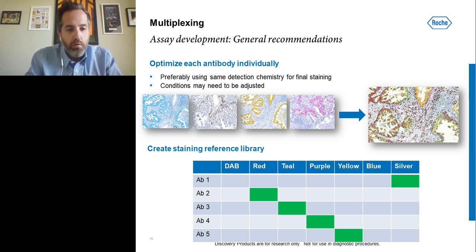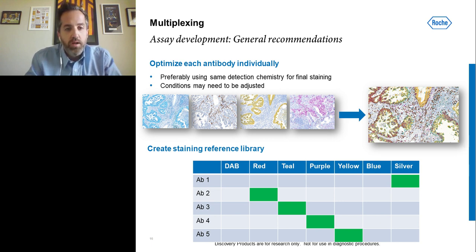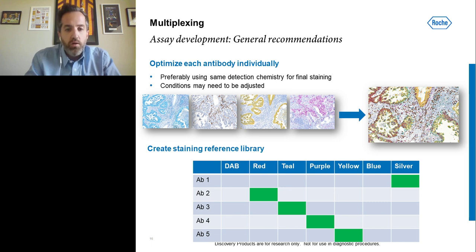Once you've decided on the detection method, we recommend not diving straight into a multiplex assay. What we advise is optimizing each antibody individually. Once you've decided on your panel, optimize each marker individually, work out which marker works best with each detection type and each chromogen type, then create your staining reference library. You always have something to go back to in order to determine if that stain is working effectively. If you dive straight into a four or five-plex assay, it's very difficult to work out what may have gone wrong.